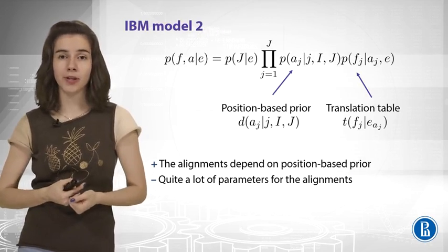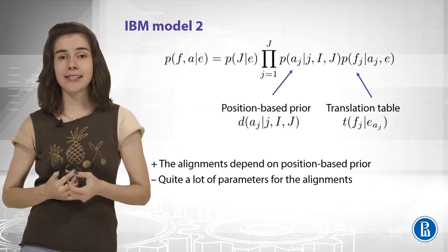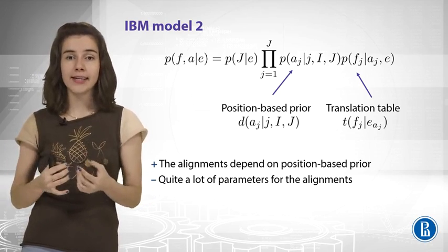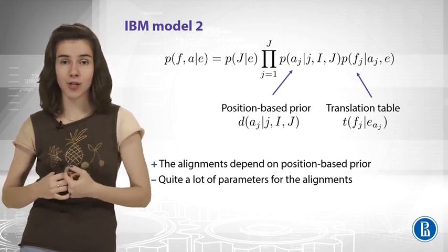So the second IBM model tries to make better. And it says, let us take J, the position of the target word, and let us use it to produce AJ, the alignment for this target word.